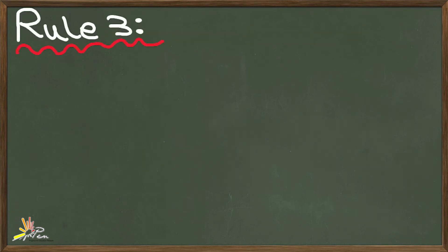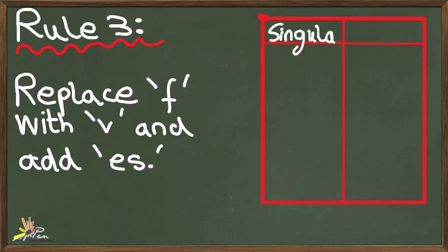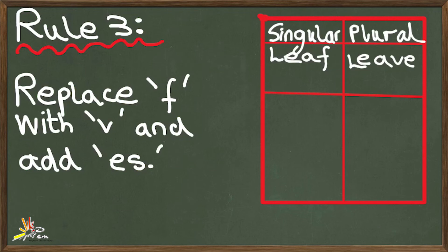Rule number 3. If a word ends in F, replace or change the F with V and add ES to convert the word into its plural form. Let's study some examples. Leaf ends with F. To change it to its plural form, replace the F with V and add ES. It becomes leaves.